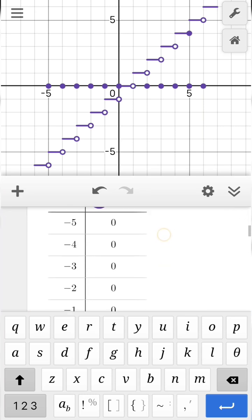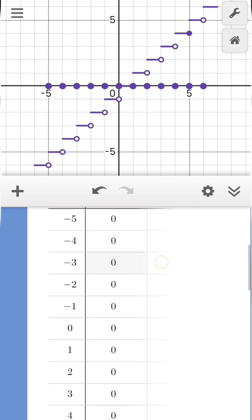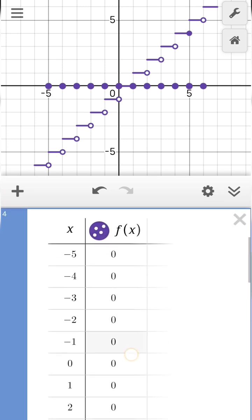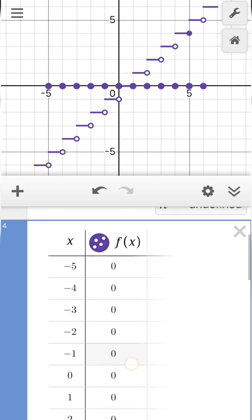You can check out the table. If x is minus 5, minus 4, minus 3 or any of the values, our greatest integer function is 0.